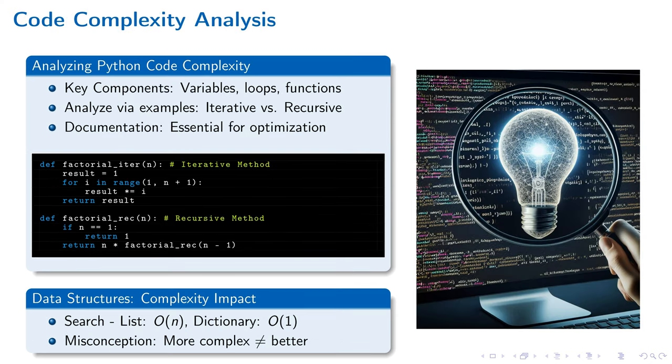When solving for efficiency, understanding code complexity is paramount. Take, for instance, the factorial iterative and factorial recursive methods for calculating factorials. The former employs an iterative process, straightforward but possibly less efficient for large inputs.